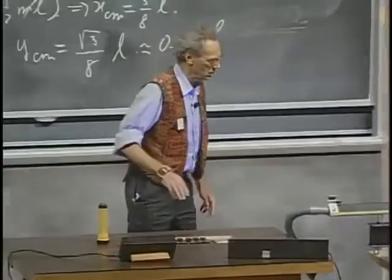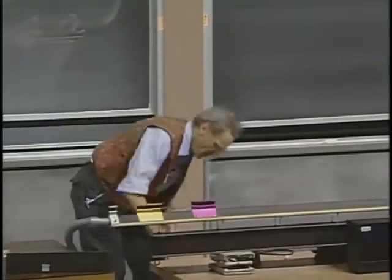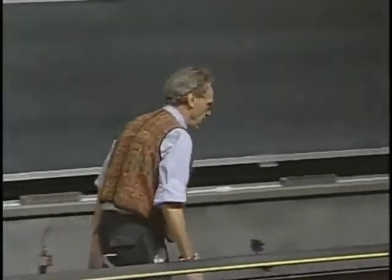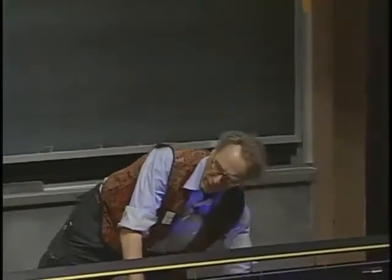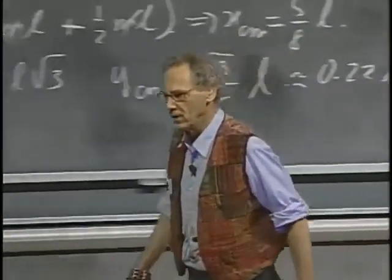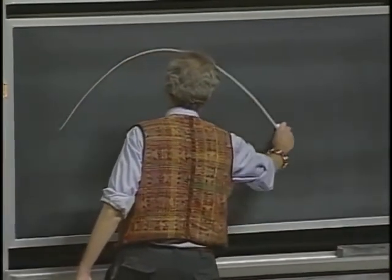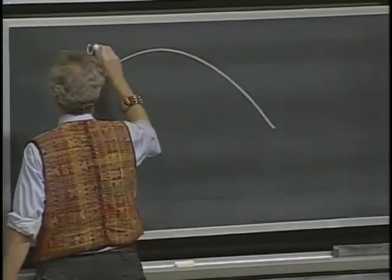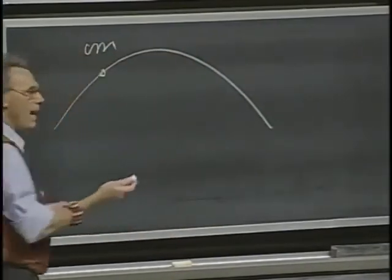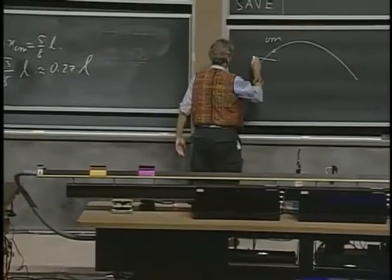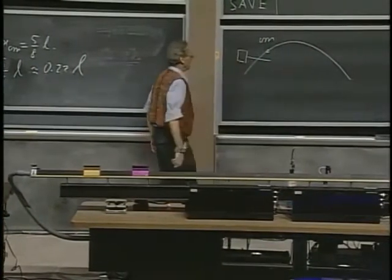When I throw up a hammer, the hammer will do very weird things — it will start to tumble and rotate — but the center of mass will behave in a civilized way. If I throw up a hammer, the center of mass, and only the center of mass, will just go along a perfect parabola, as if it were just a tennis ball. At one point I will do it with a squash racket.